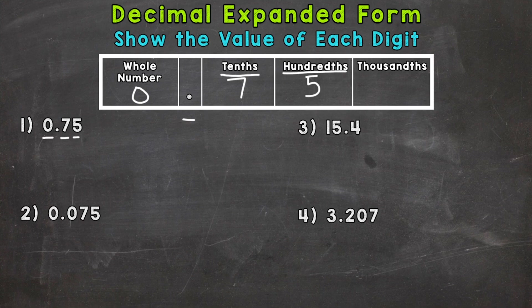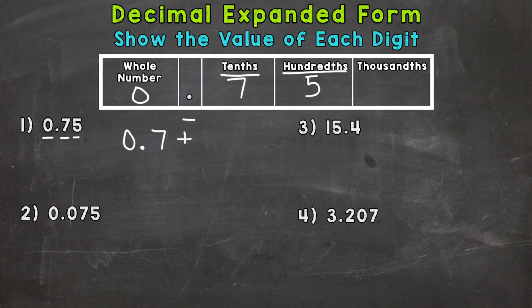When we put this in expanded form, there are two options: we can use decimals or we can use fractions. They are equivalent to each other, so it doesn't really matter, but it's good to know both. I'll start with decimals, beginning with the greatest valued digit — the digit furthest to the left. That seven is worth seven tenths, plus that five has a value of five hundredths.